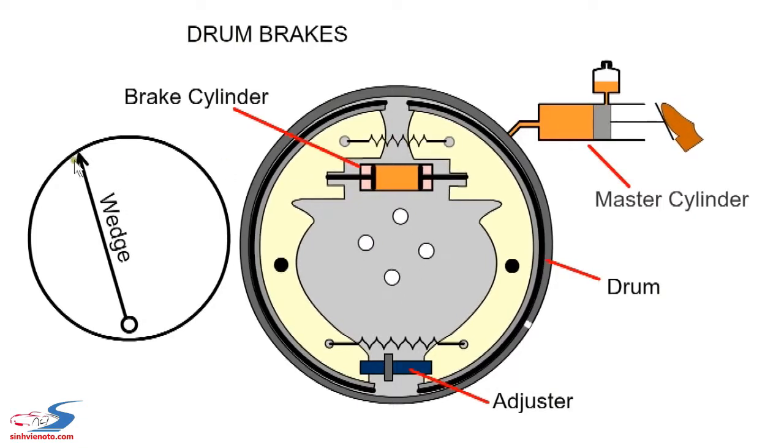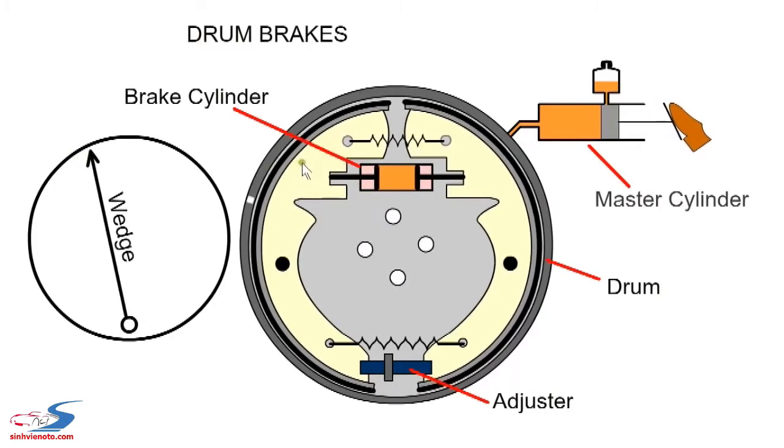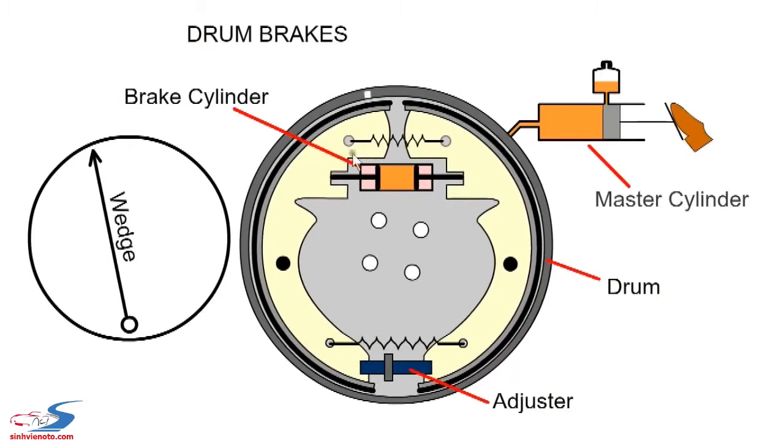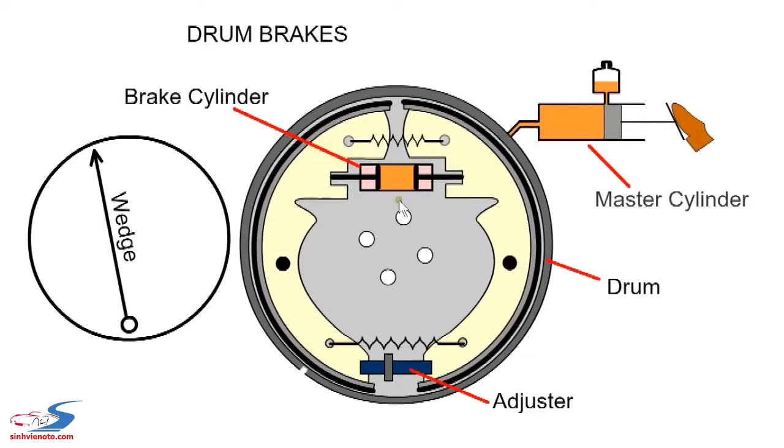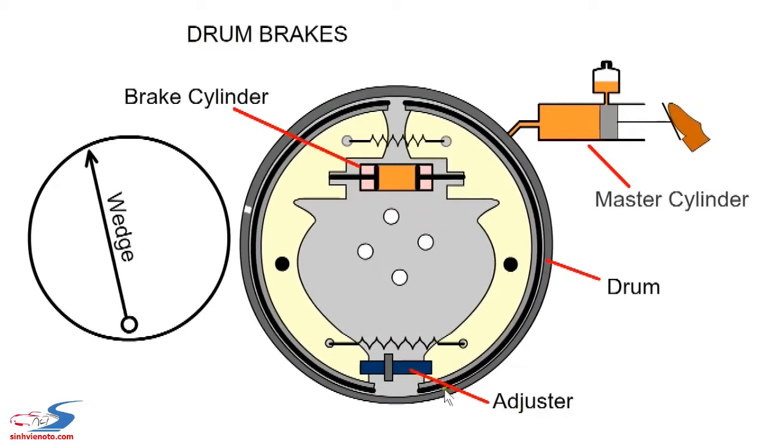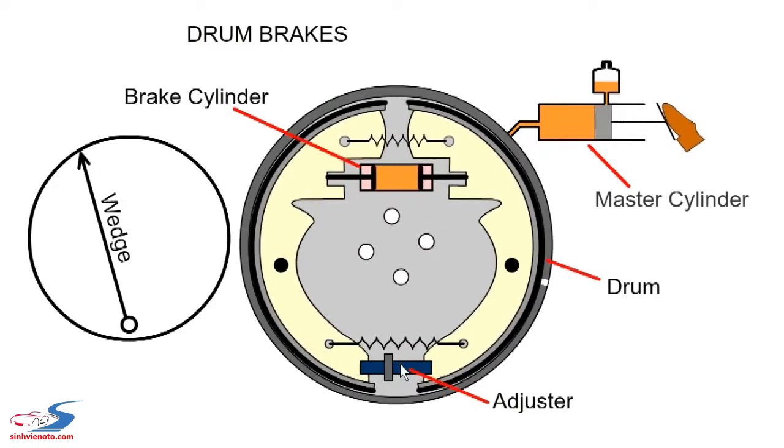When this brake shoe contacts the drum, there is a wedging action, which helps to increase braking force, but it also requires a spring to retract it. When the brake pads wear, the adjuster is used to alter the bottom anchor position.